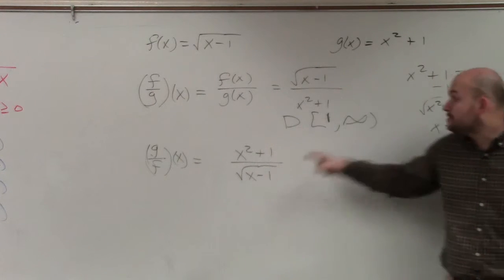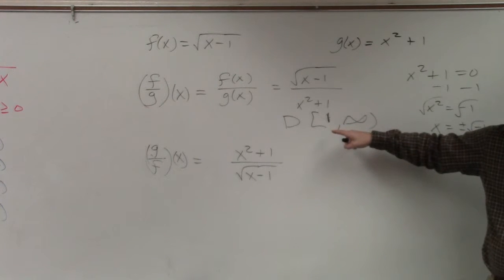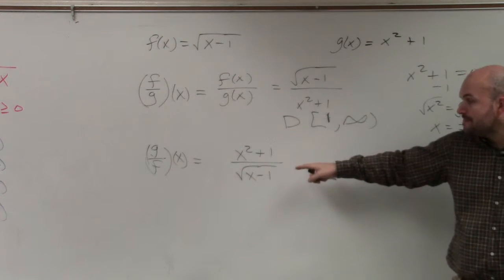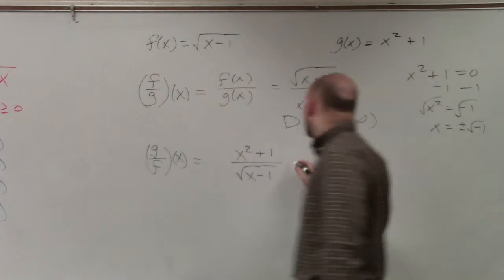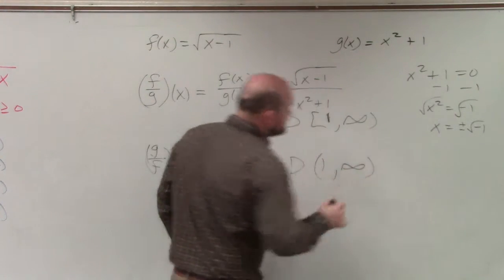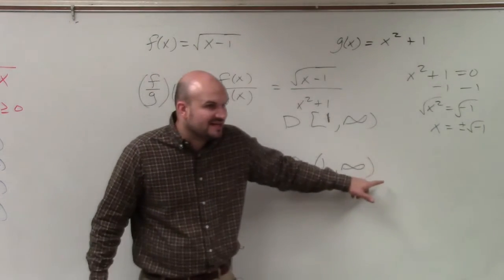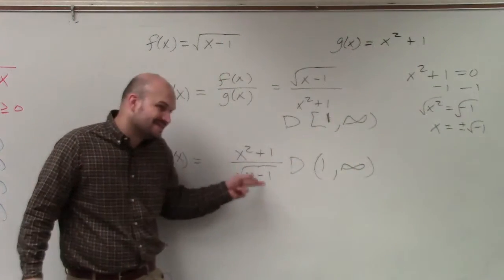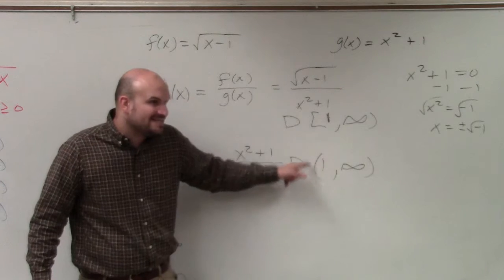So therefore, 1 is no longer a part of my domain. But I can still plug that into the radical. So now my domain looks like this. It's still from 1 to infinity. But now, since this is in the denominator, 1 is not included.